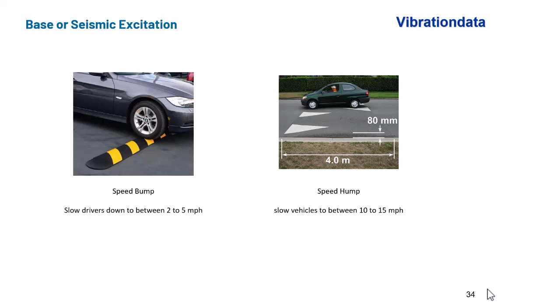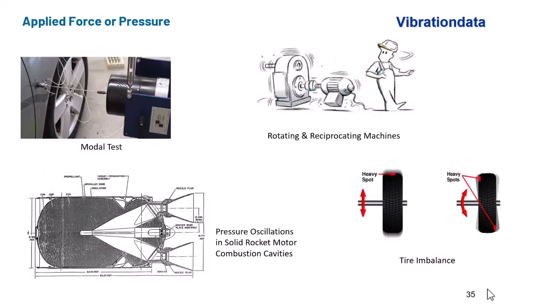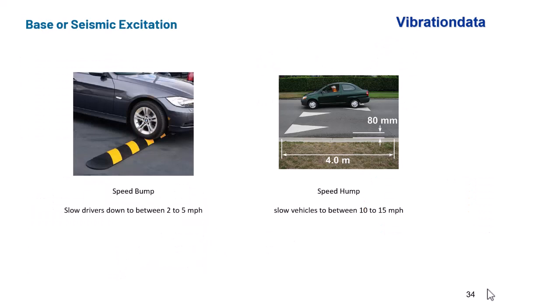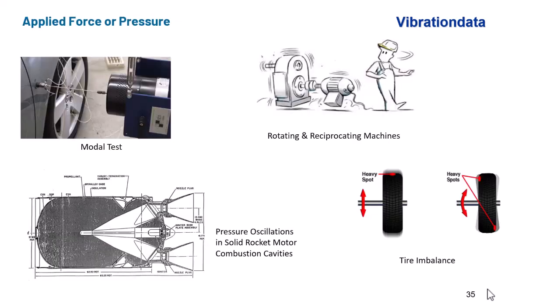A few other very common things here. On the left, we have a speed bump. That's intended to slow drivers down to between 2 to 5 miles per hour. That's another source of base excitation. These longer ones are called speed humps. They're designed to slow vehicles to between 10 to 15 miles per hour. Those are a bit of a nuisance to drive over, but they do serve an important purpose. That concludes the base excitation. We're actually going to be coming back quite often to base excitation in terms of our mechanical engineering and the response of components to base excitation.